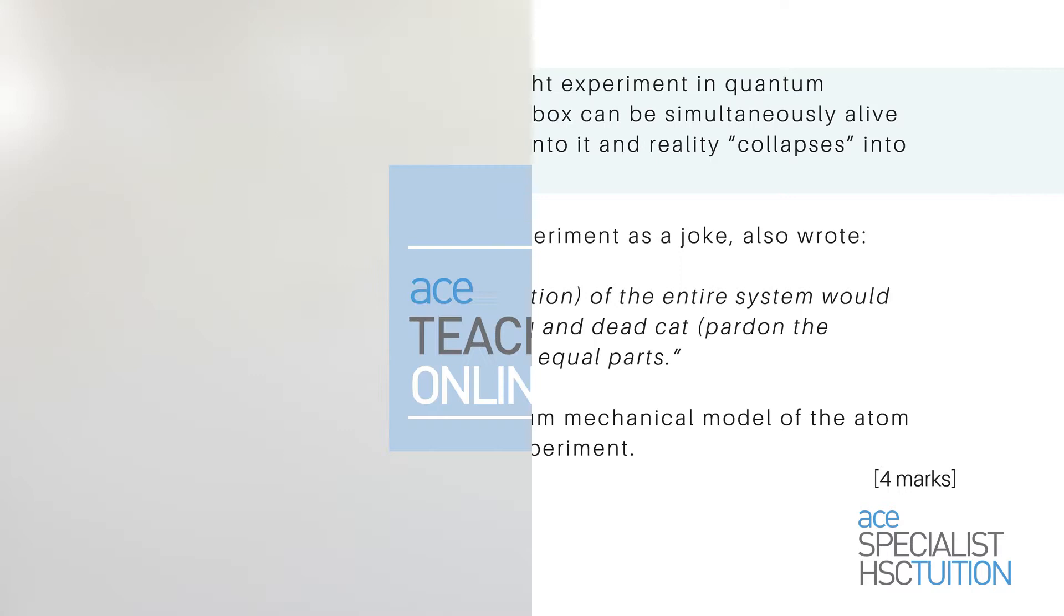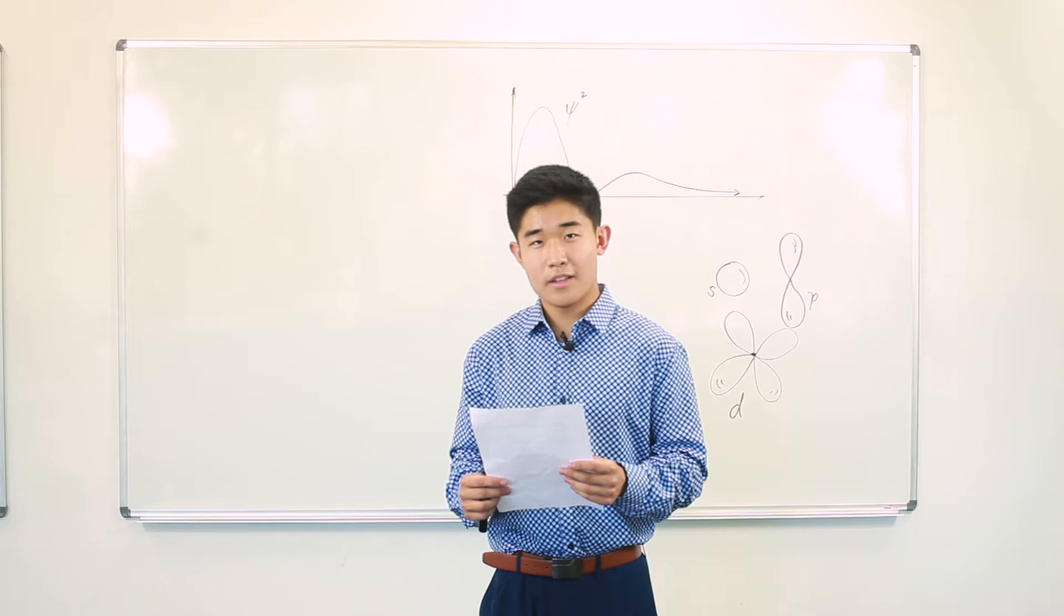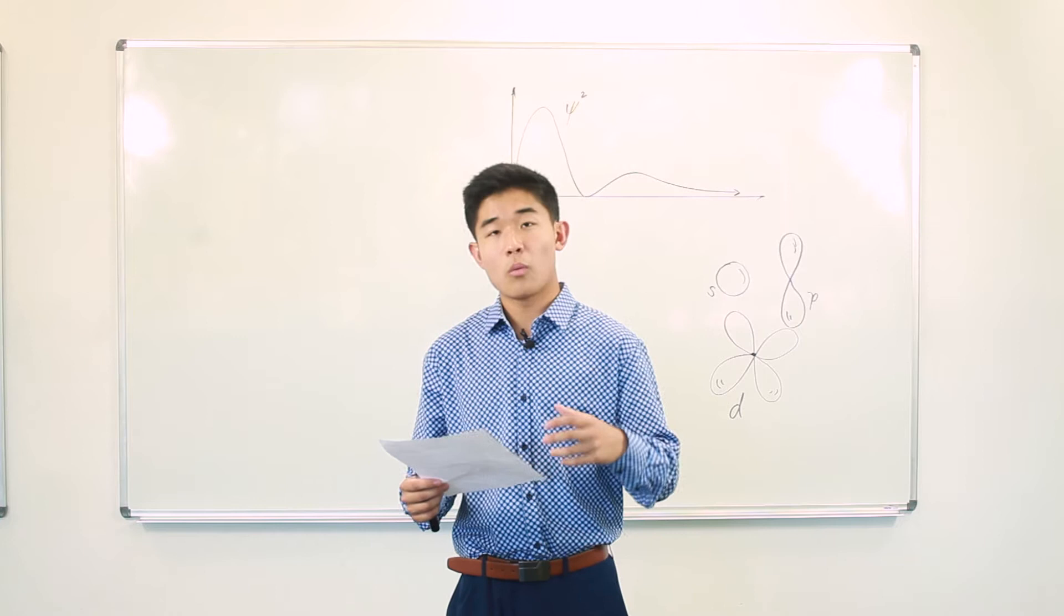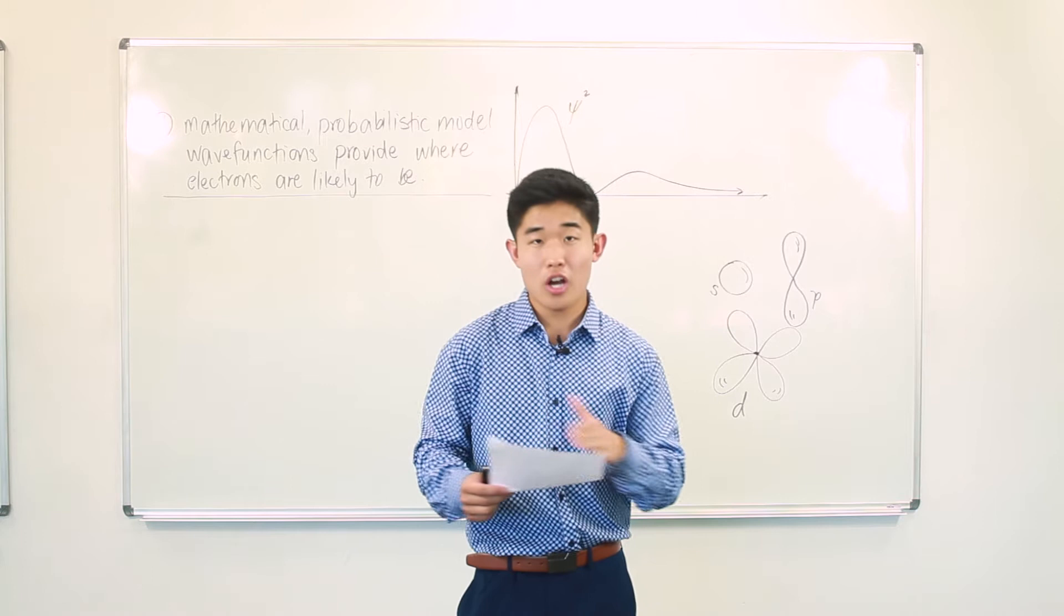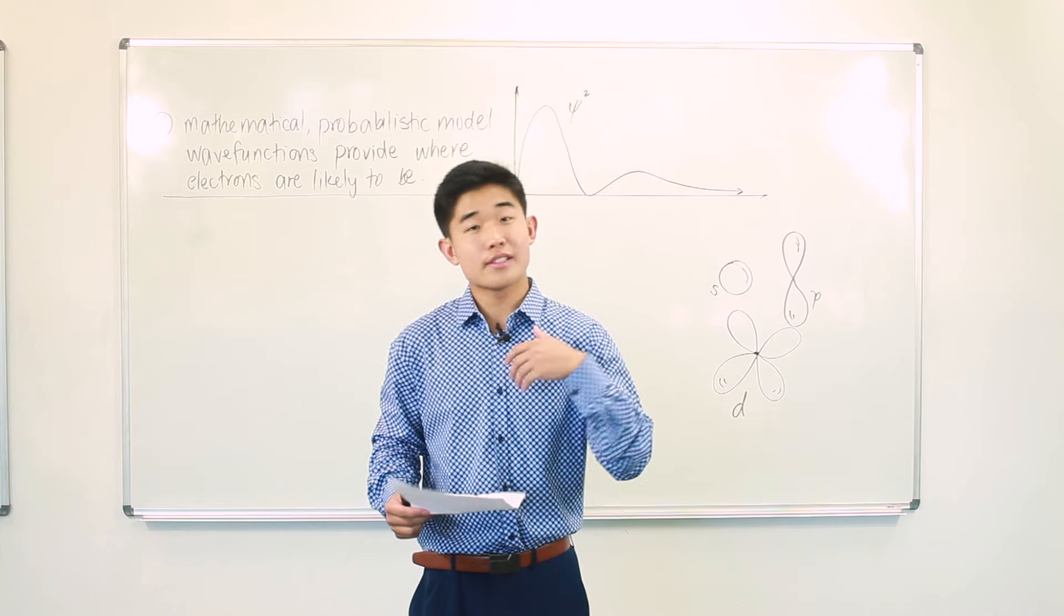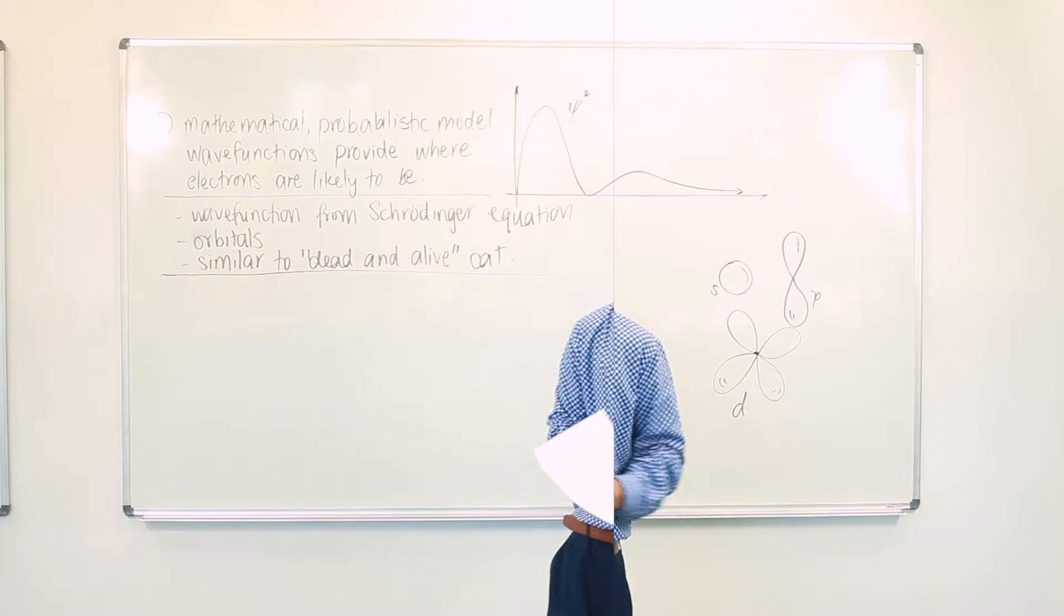To answer this question, we have to consider four key points. The first point is to understand that Schrödinger's model is a probabilistic model of the atom, where mathematically defined wave functions provide indications as to where electrons could be. The wave functions obtained from solving the Schrödinger equation similarly spread out the charge of the electron over a region of 3D space known as an orbital. This is in a similar way to how the living and dead cat are spread out over this entire system's wave function.